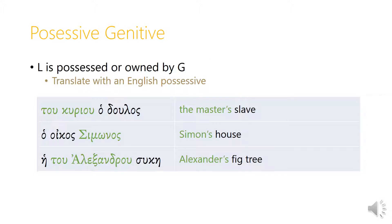The possessive genitive translates much the same way: tu kuryu ha doulos is the master's slave, ha oikos simonas is Simon's house, and hei tu alexandru suke can be Alexander's fig tree, or the fig tree owned by Alexander. There's nothing about the form of the words that tells us which kind of relationship the genitive is indicating — we have to infer it from context.